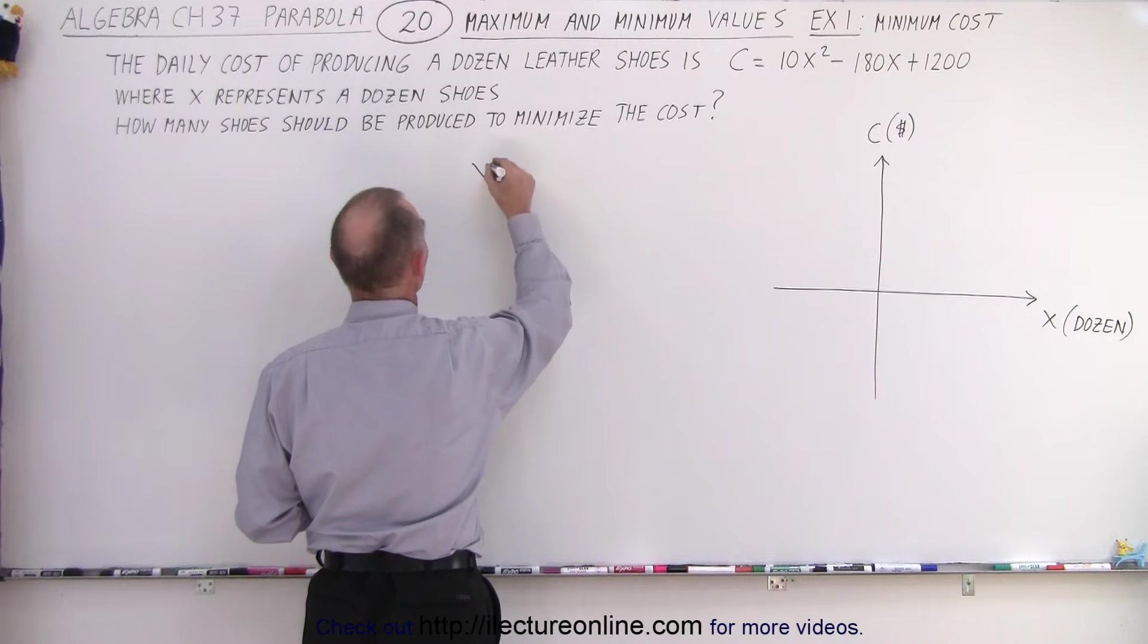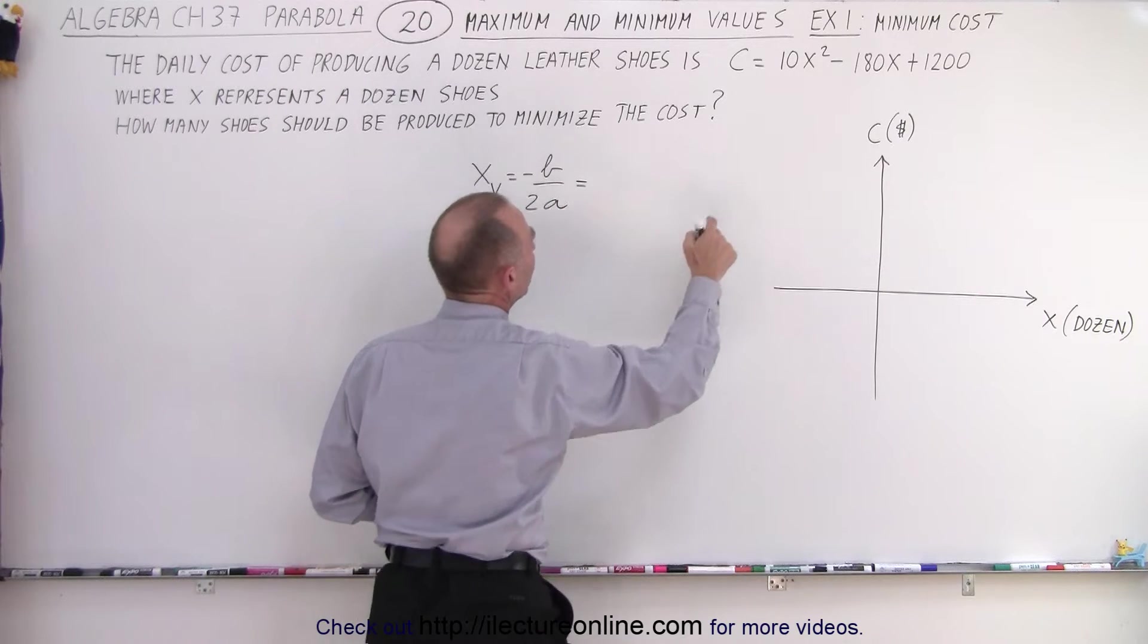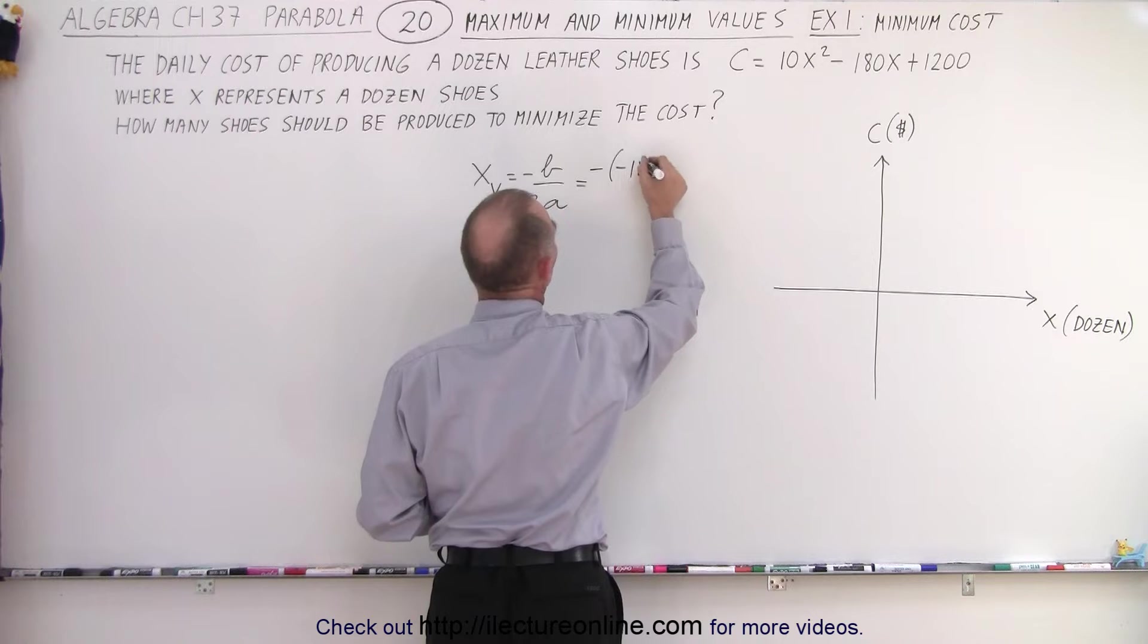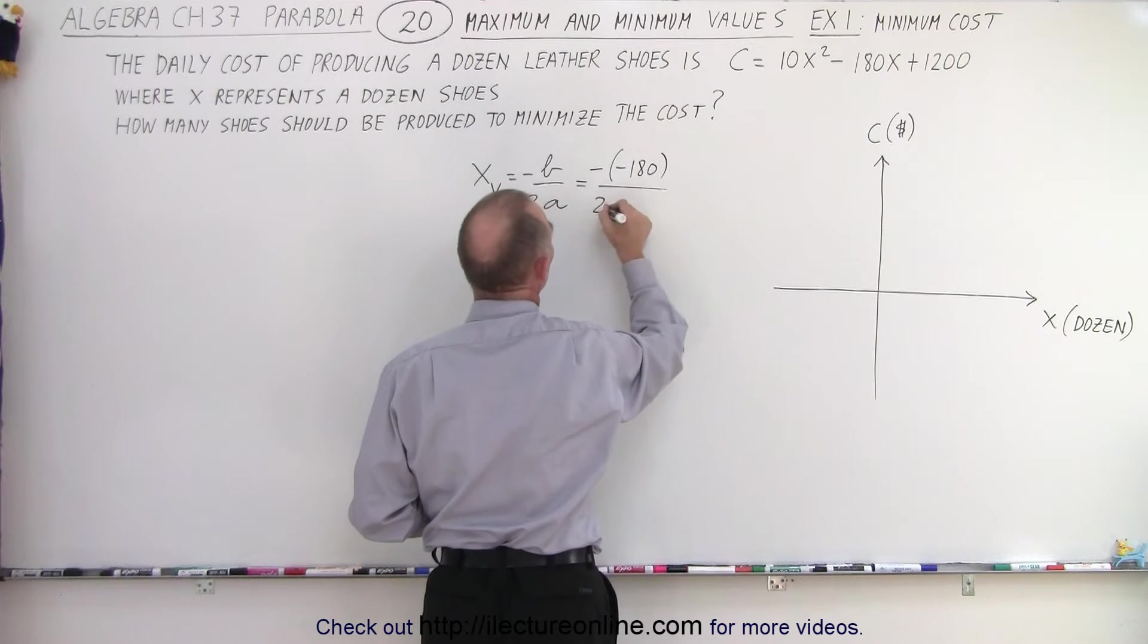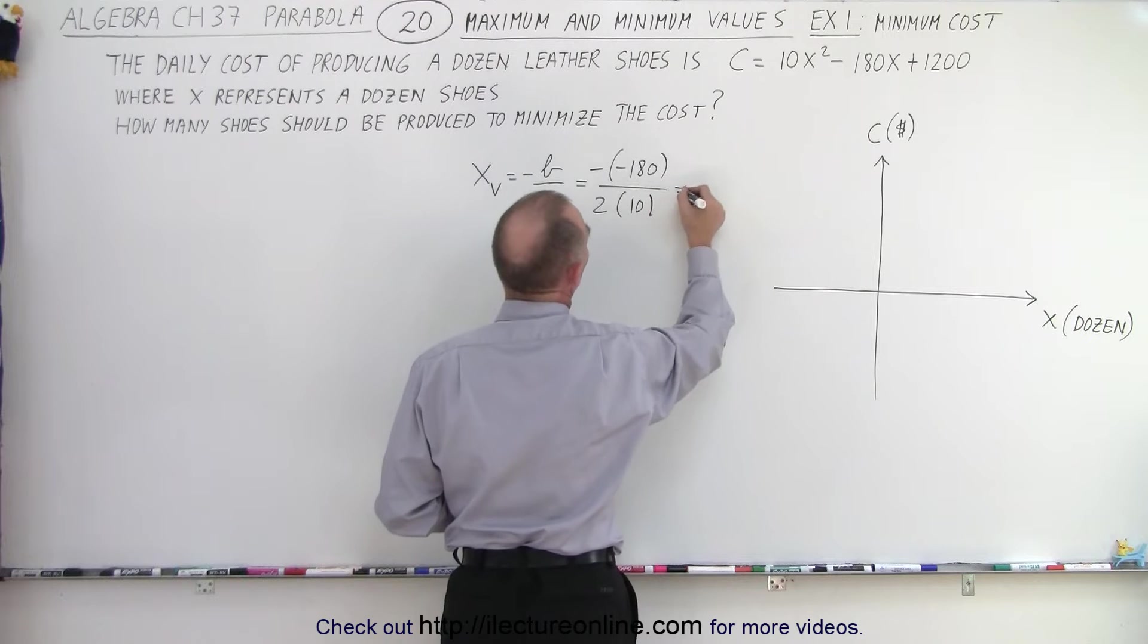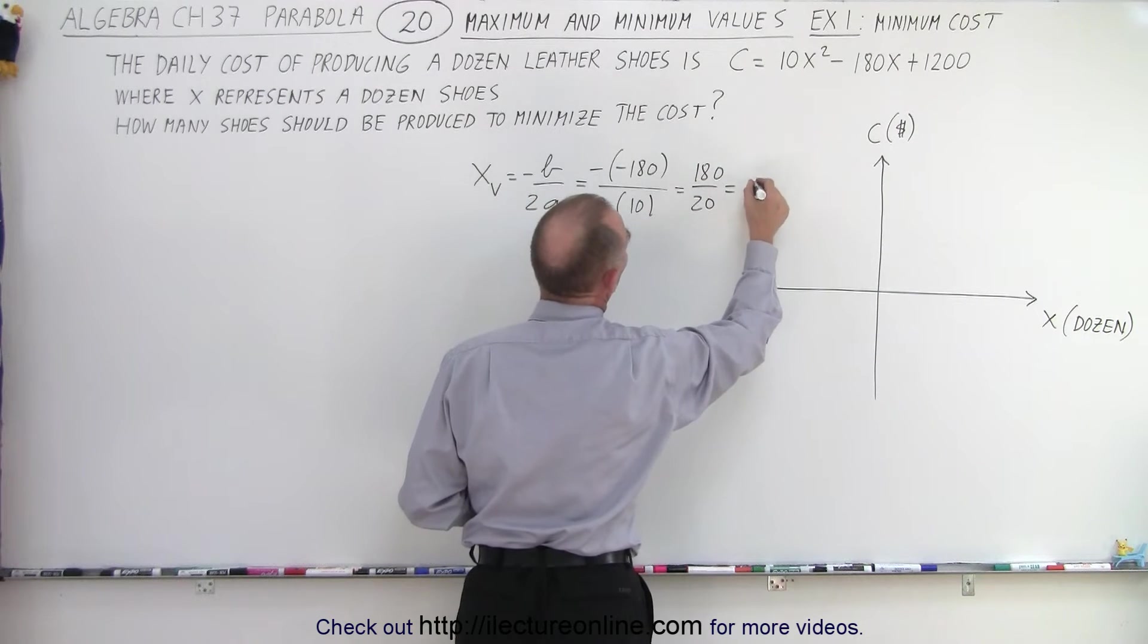So, the x-coordinate of the vertex is equal to minus b over 2a. In this case, b is equal to 180, so it would be minus, minus 180, divided by 2 times a, and a, that's equal to 10. So, this is equal to 180 divided by 20, which is equal to 9.